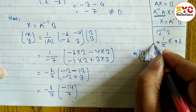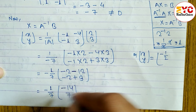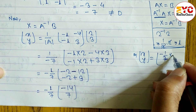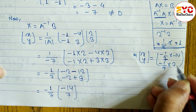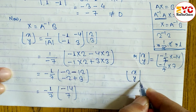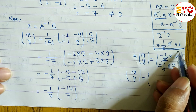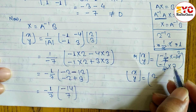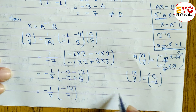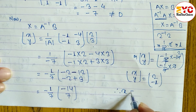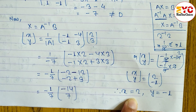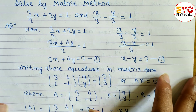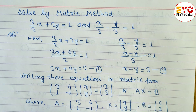So [x, y] = [2, −1]. Therefore x = 2 and y = −1. This is the answer to the question solved using the matrix method.